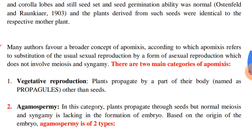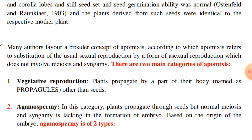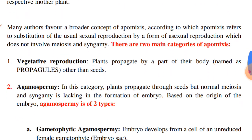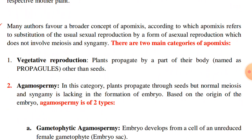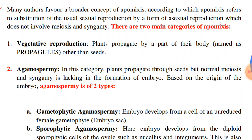Many authors favor a broader concept of apomyxis, according to which apomyxis refers to substitution of the usual sexual reproduction by a form of asexual reproduction which does not involve meiosis and syngamia. There are two main categories of apomyxis: number one, vegetative reproduction.